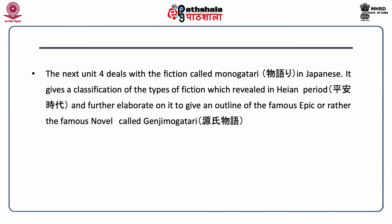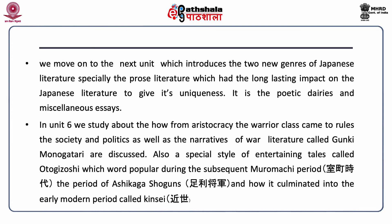Unit 4 deals with the fiction called Monogatari in Japanese. It gives a classification of the types of fiction revealed in the Heian period and further elaborates to give an outline of the famous epic — or rather the famous novel — called Genji Monogatari. We then move on to the next unit, which introduces two new genres of Japanese prose literature that had a long-lasting impact on Japanese literature and gave it its uniqueness.